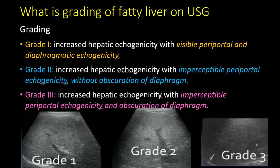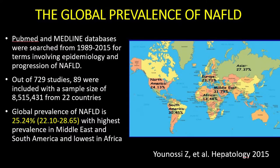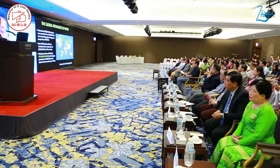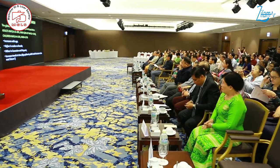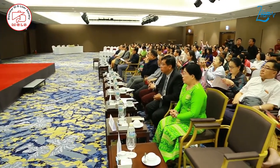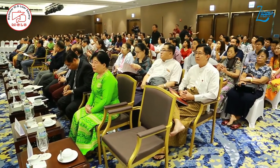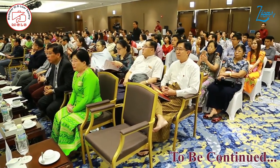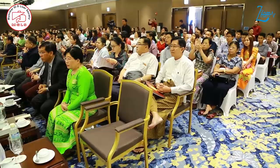By the way, if anybody is interested in having this presentation, you can take it from ZIFAM. The global prevalence is 25.24% — a rising incidence in every part of the world. It is higher with increasing age, higher in males versus females, higher in Caucasian and Hispanic populations, with increasing trends over time.